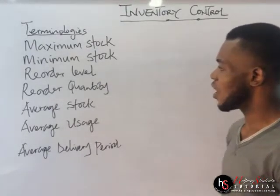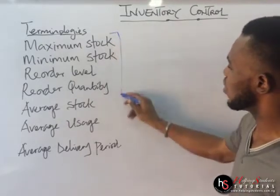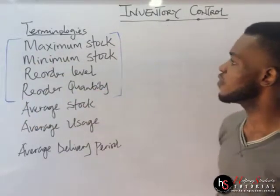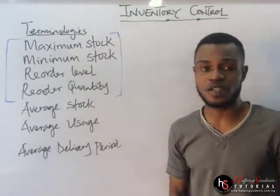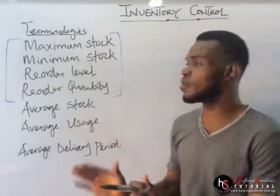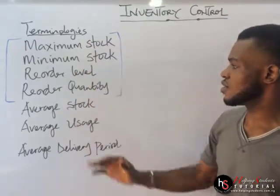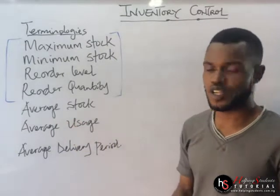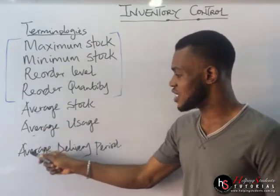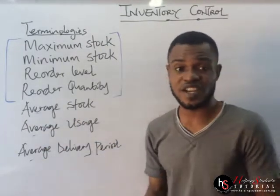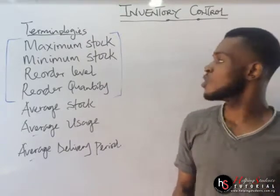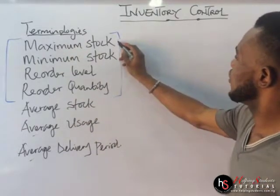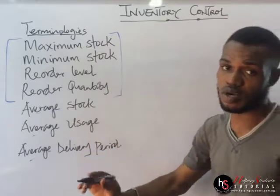I would like you to be more focused on the first four formulas. If you are able to derive the formulas for those, you are good to go. The remaining ones — average stock, average usage, average delivery period — you won't have any issues, because the moment you see 'average,' it becomes very easy to derive the formula.